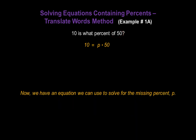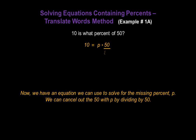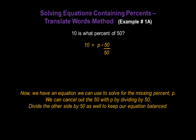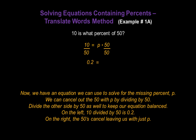Finally, 'of 50' means multiply by 50, so there's our equation. Now we have an equation we can use to solve for the missing percent p. We can cancel out the 50 with p by dividing it by 50. Of course, we also have to divide the other side by 50 as well to keep our equation balanced. On the left, 10 divided by 50 is 0.2. And on the right, the 50s cancel, leaving us with just our variable p.